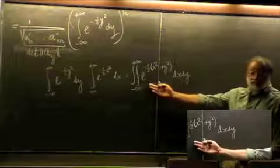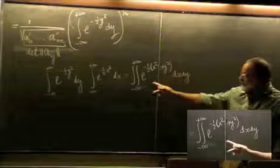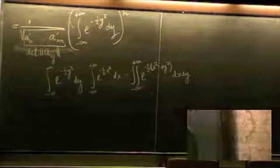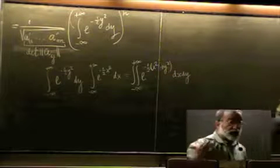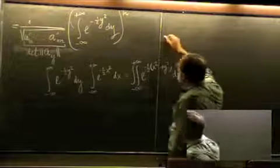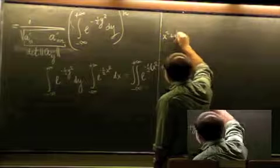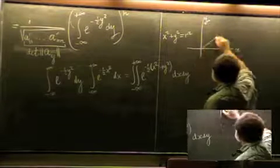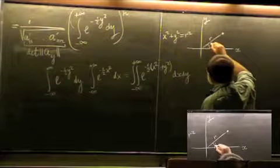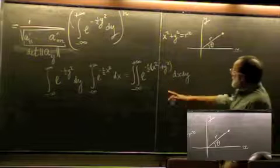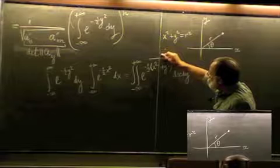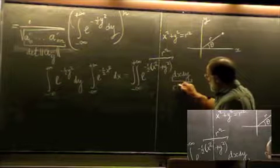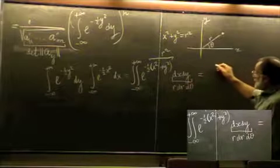The integrand of this double integral is cylindrically symmetric, so it is appropriate to switch to polar coordinates. We set x² + y² = r², choosing polar coordinates (r, θ) in the xy-plane. The area element becomes r dr dθ.